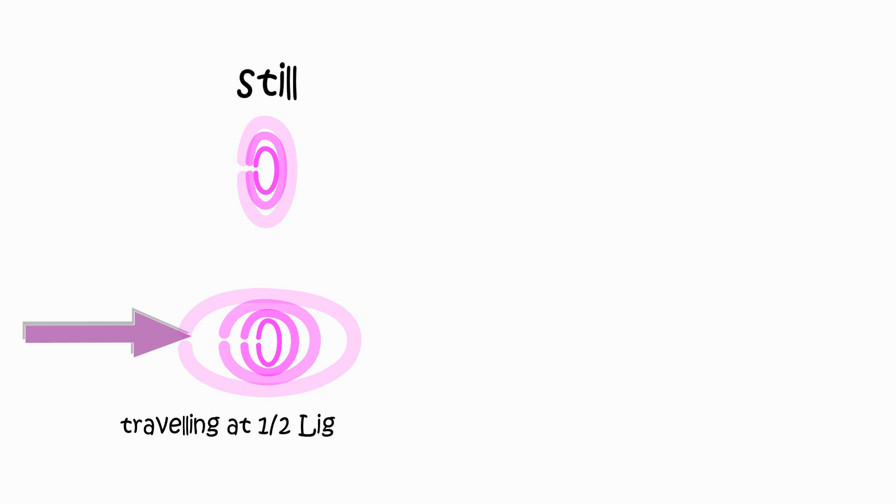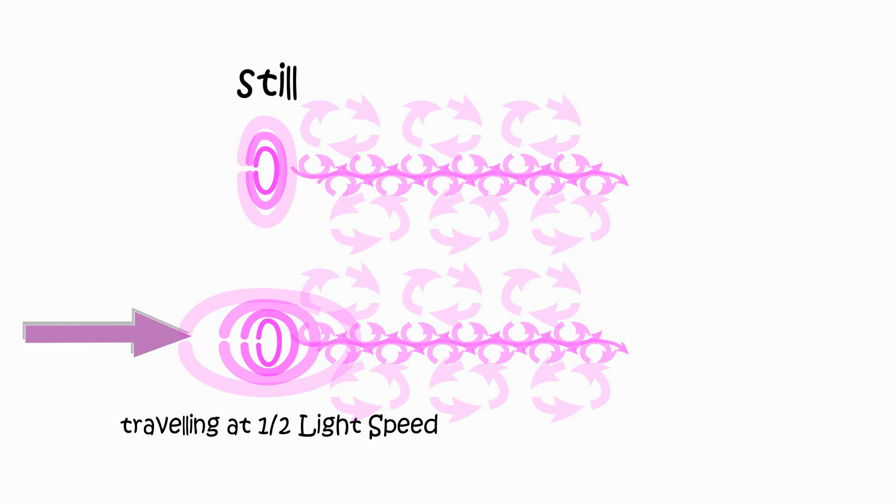One integrated field system is still, another integrated field system moving at 50% light speed. Both emit lasers in the direction of the moving integrated field system's motion. Both beams of laser travel at the same speed after emission.